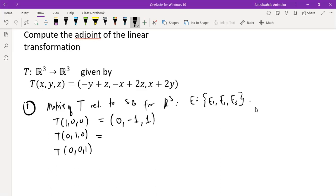So if we go through this for the second one, we are going to have Y is 1, so we're going to have minus 1 here, 0 in the second component, and 2 in the third component. What about the last one?